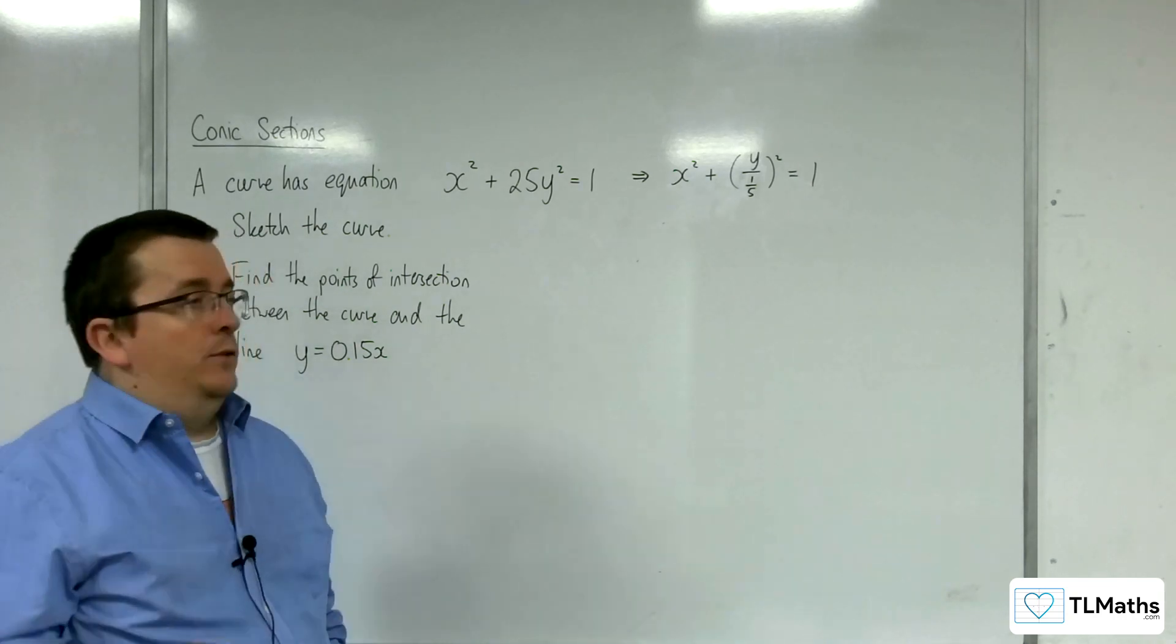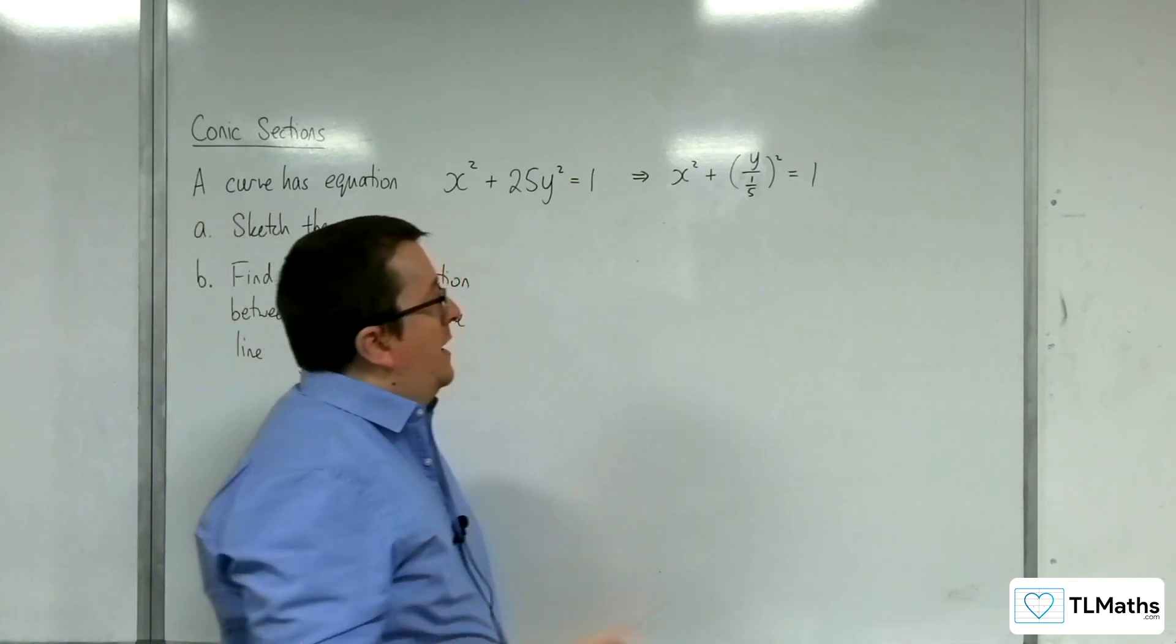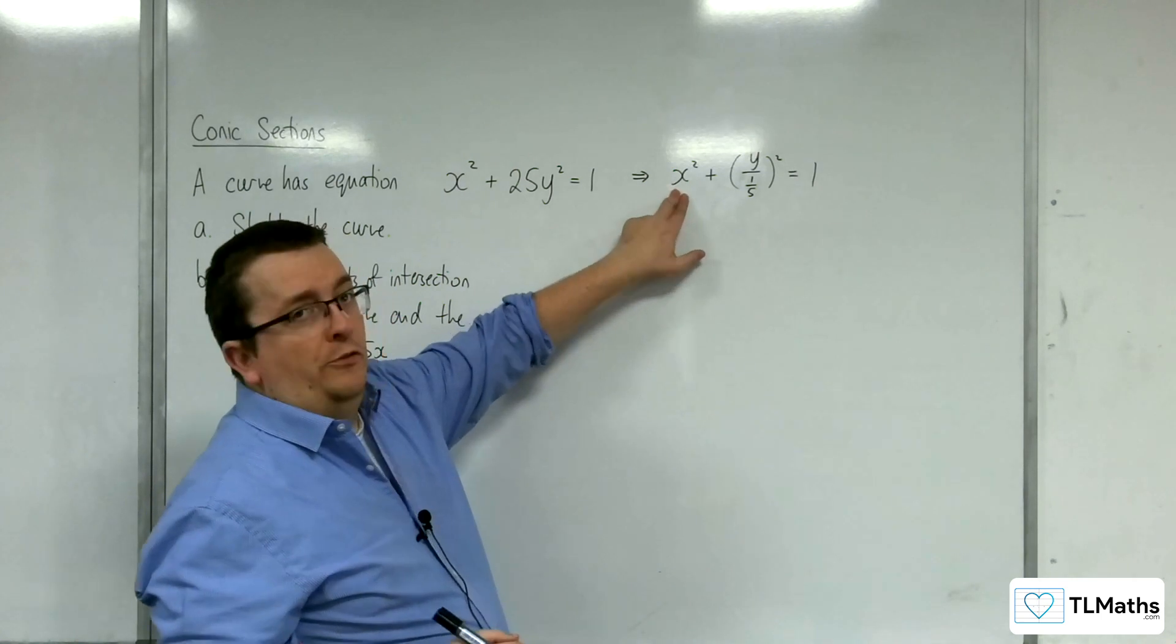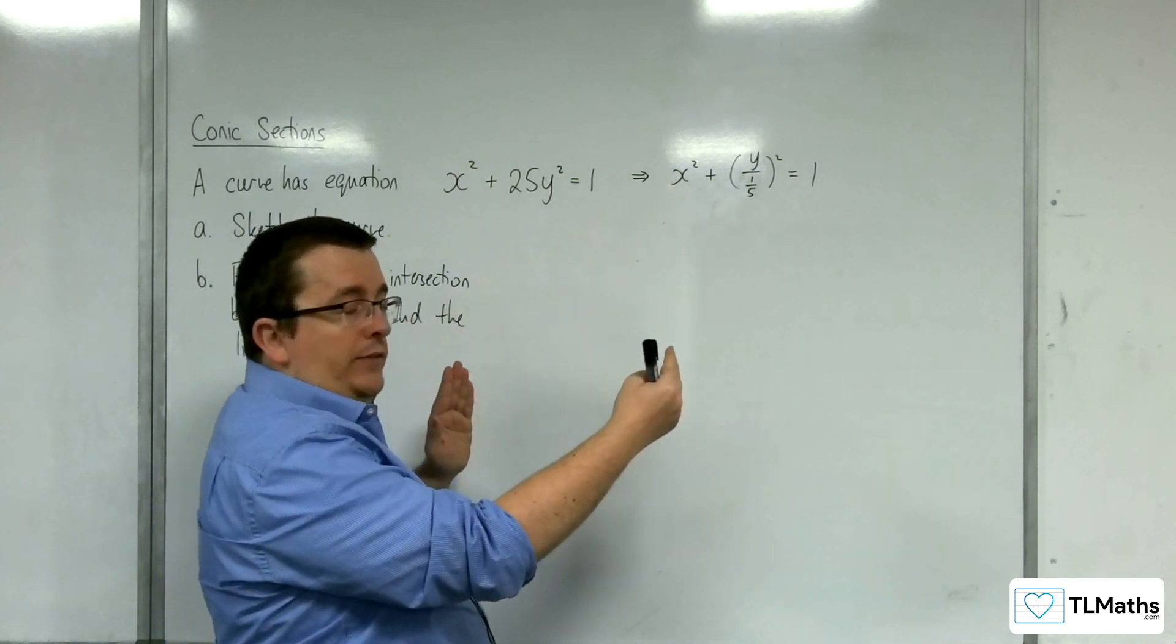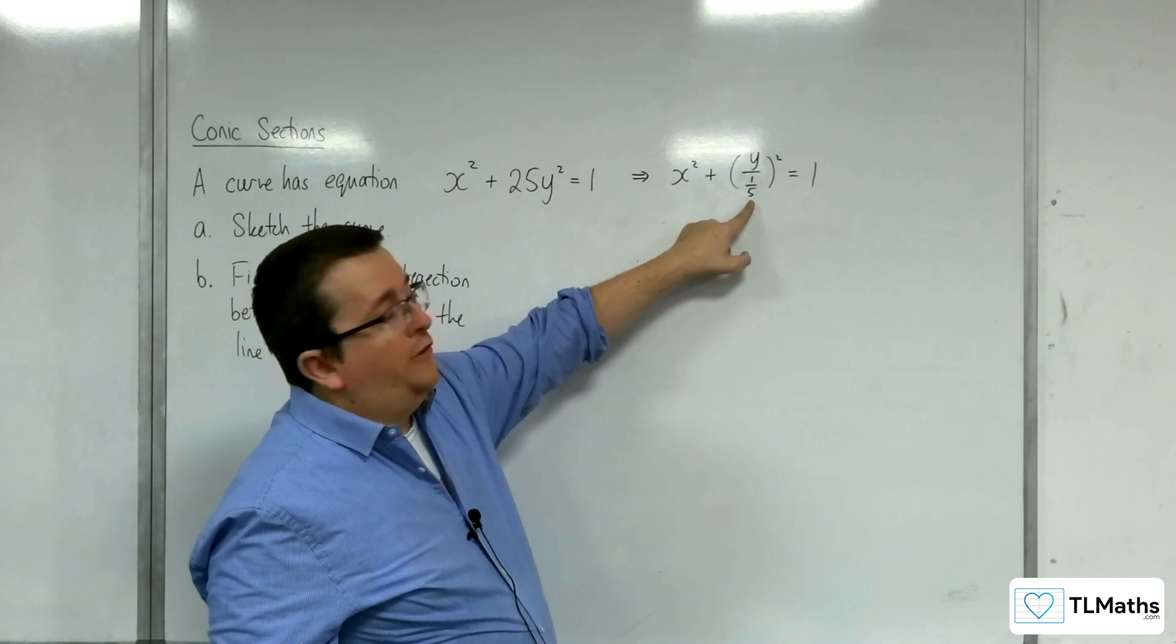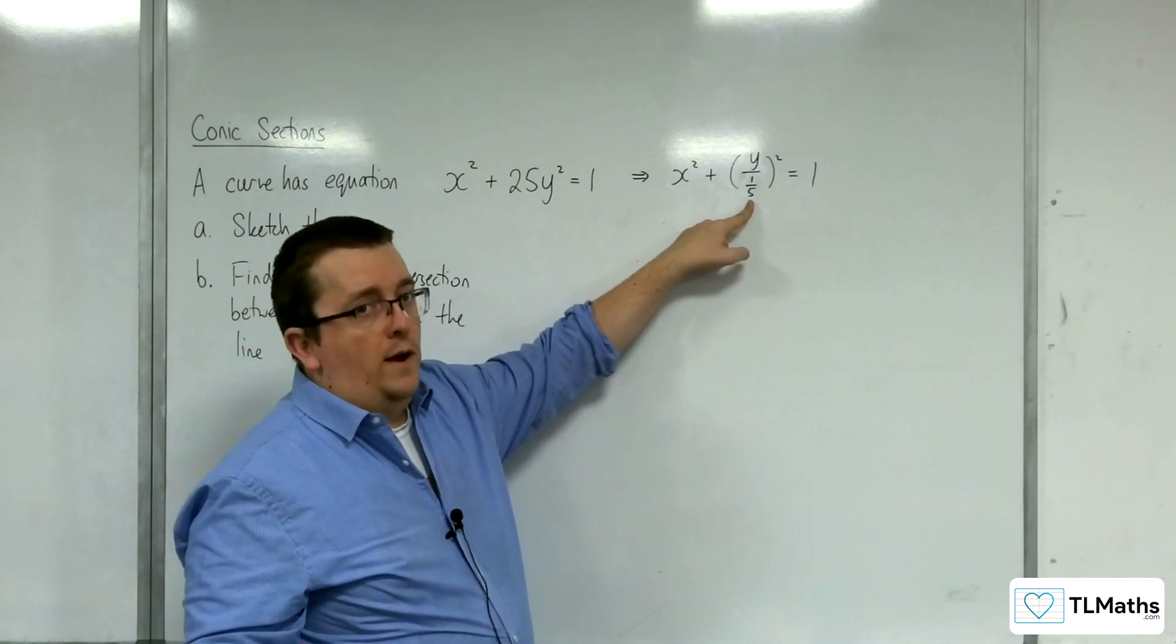So what that's telling you is that this is an ellipse that is going between minus 1 and 1 on the x axis and between minus 1 fifth and 1 fifth on the y axis.